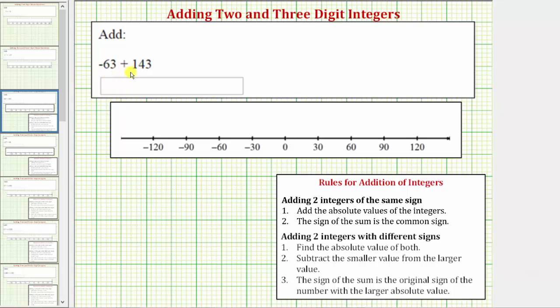We're asked to add negative 63 and positive 143, or find the sum of negative 63 and positive 143. Before we find the sum though, we should be able to recognize that the positive 143 is going to outweigh the negative 63, and therefore the sum will be positive.